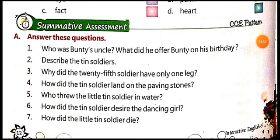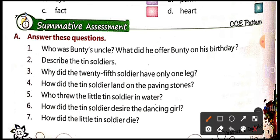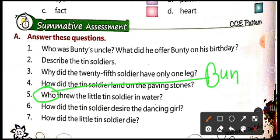Question number five: who threw the little tin soldier in water? The answer is Bunty. Bunty threw the little tin soldier in water. Copy this answer in your book.